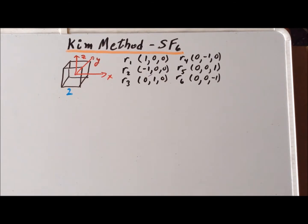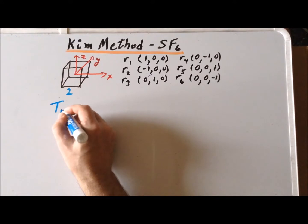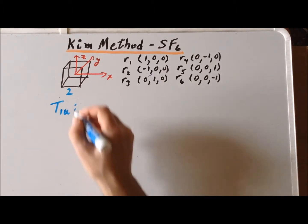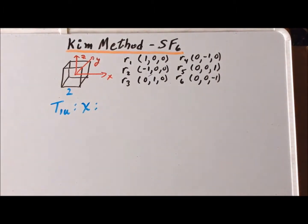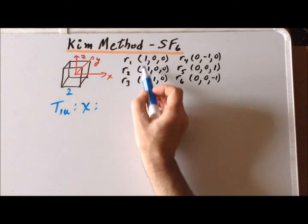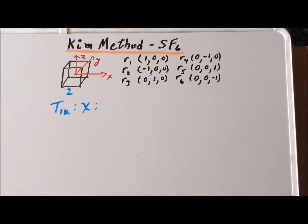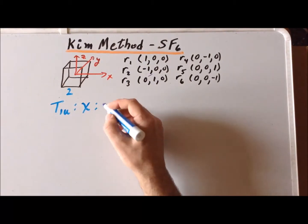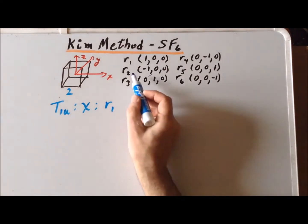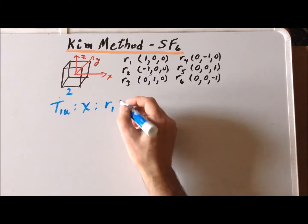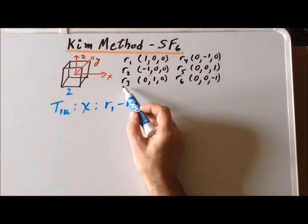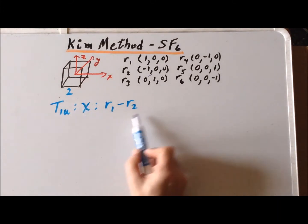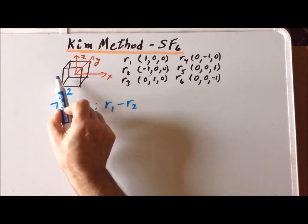Finally, for the stretching motions, we have the triply degenerate T1u irreducible representation with three basis functions: x, y, and z. For basis function x, we simply look at the x-coordinate as the coefficient. R1 has x=+1, giving +R1; R2 has x=-1, giving -R2; R3 through R6 have x=0, so their coefficients are 0. The vibration is R1-R2: as R1 gets longer, R2 gets smaller. For basis function y, R1 and R2 have y=0 so they vanish, and we get R3-R4.